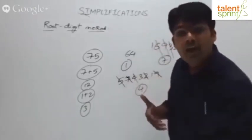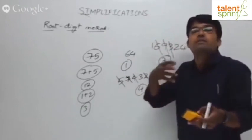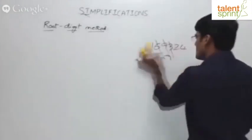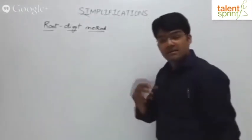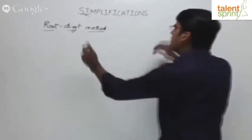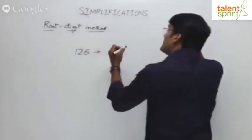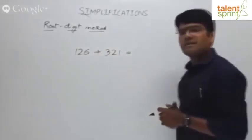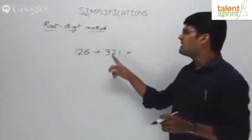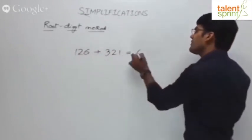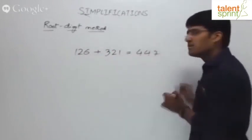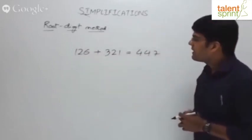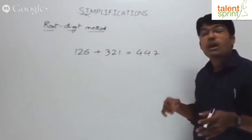How can we use this root-digit method for simplification questions? For example, 126 plus 321 equals 447. The root-digit of 126 is 9 (1+2+6). The root-digit of 321 is 6 (3+2+1). Because this is addition, 9 plus 6 is 15, and since we can drop 9, root-digit of the left-hand side is 6.